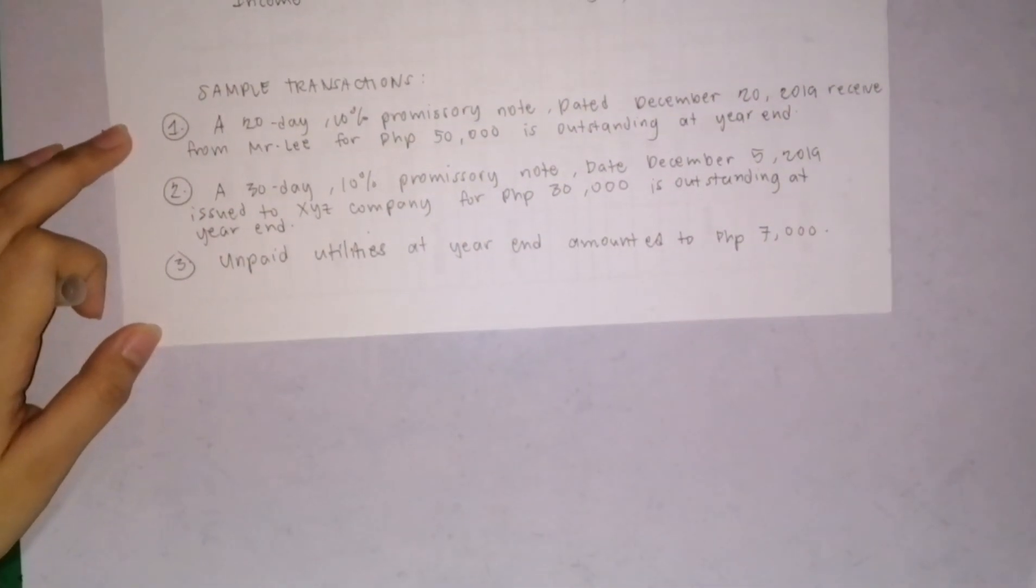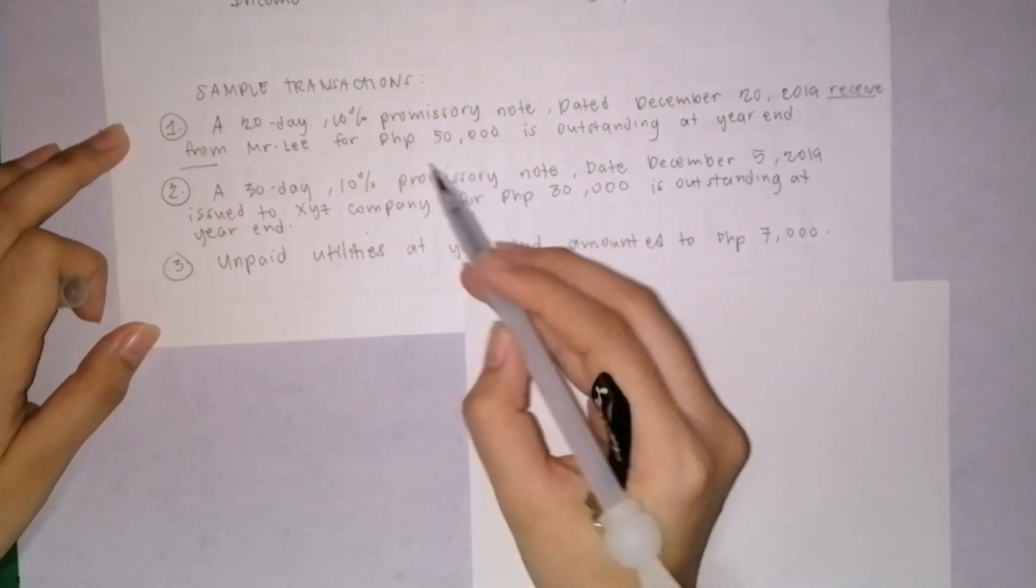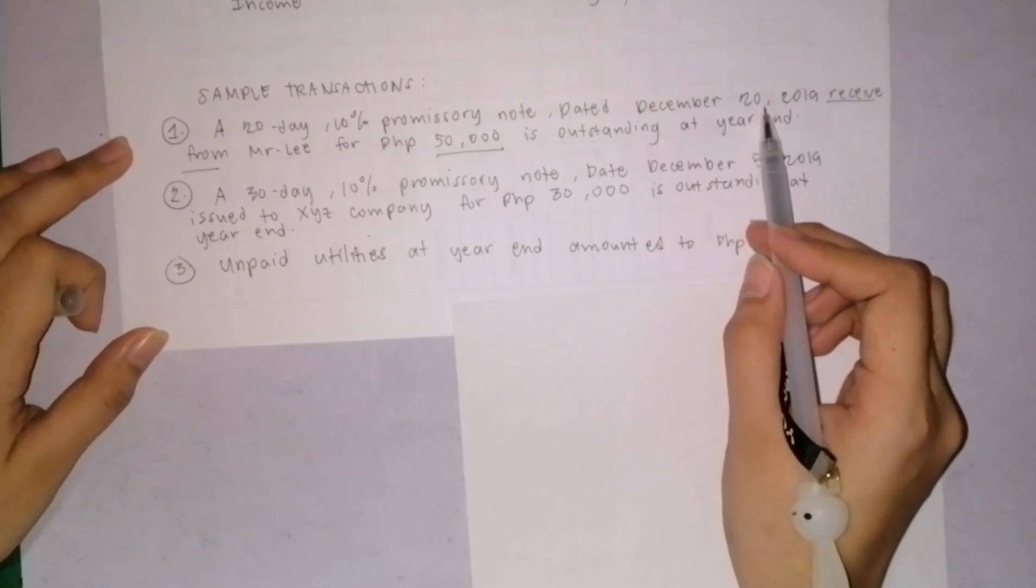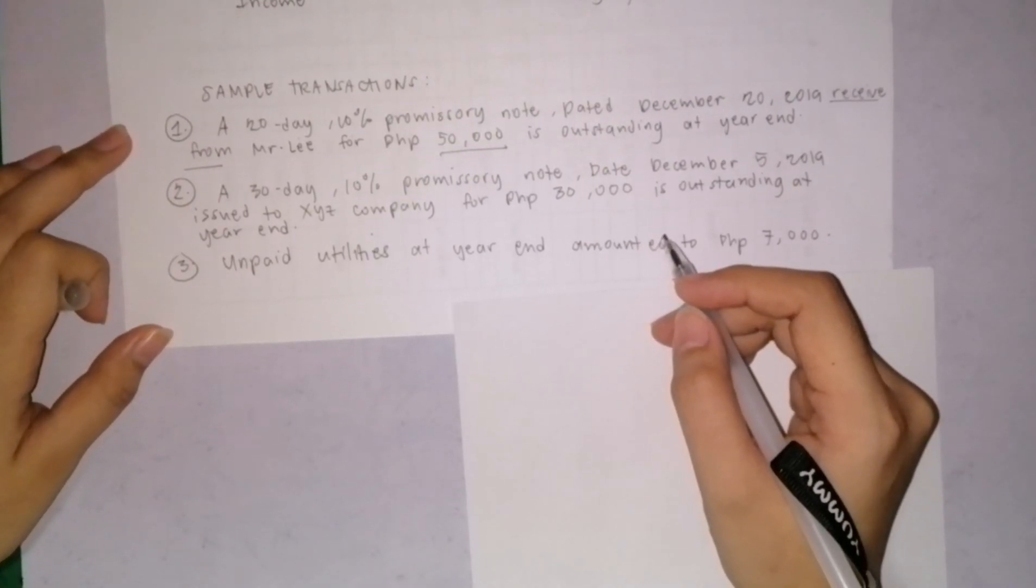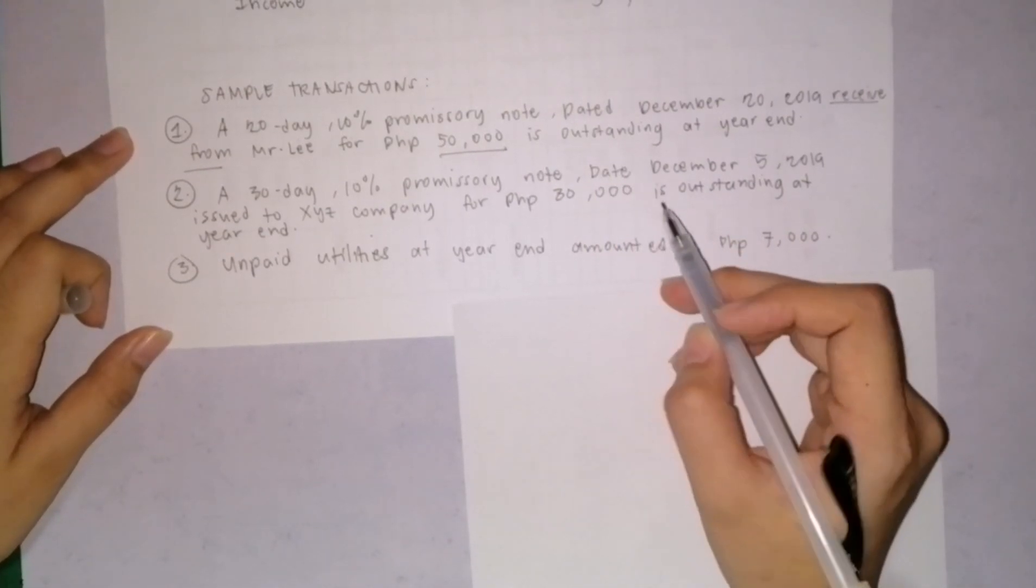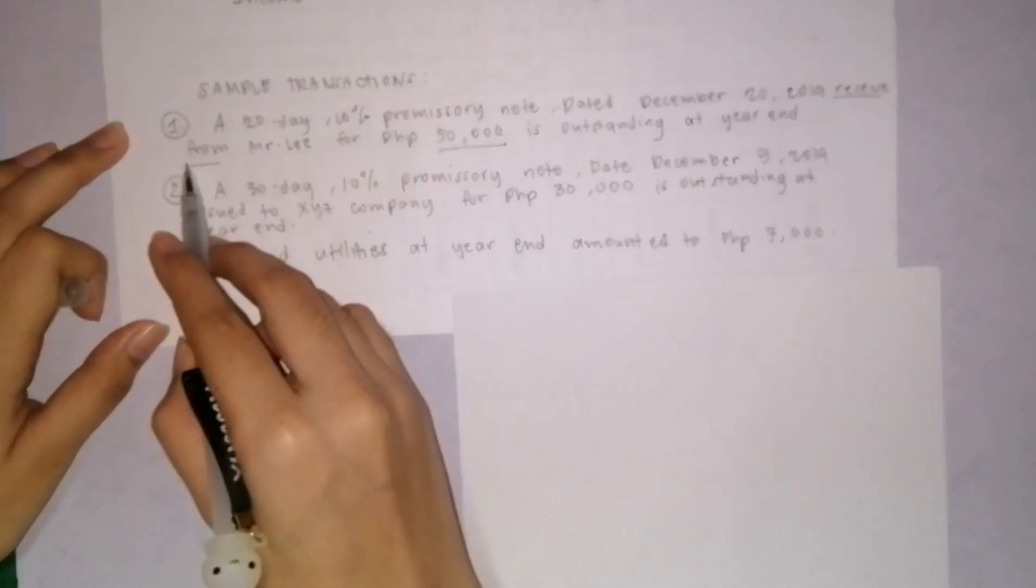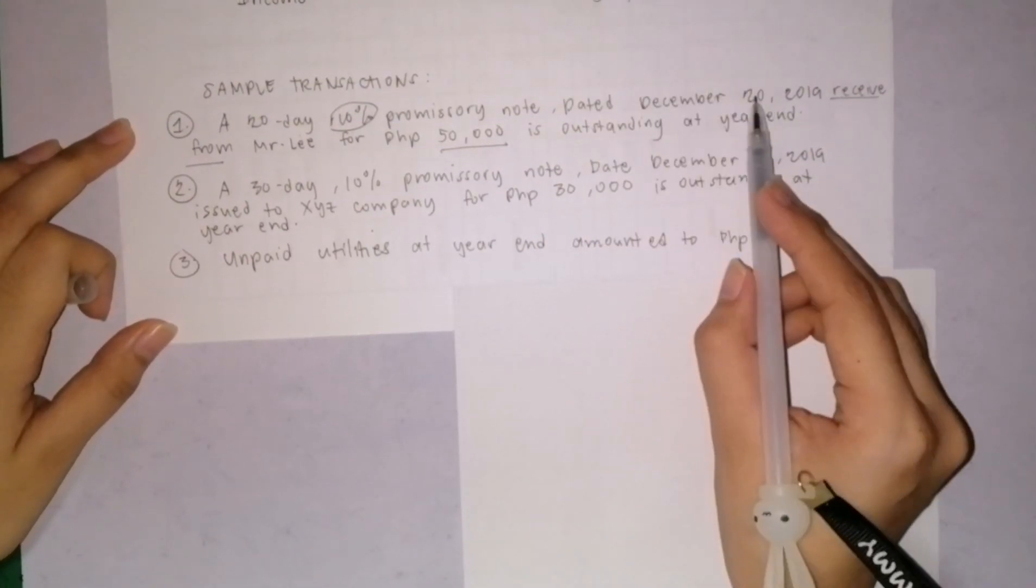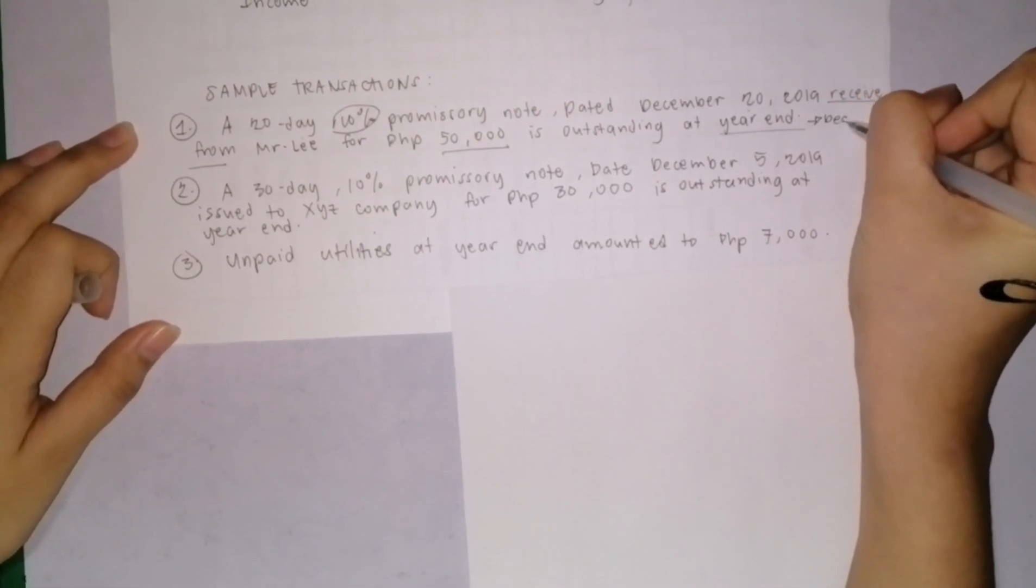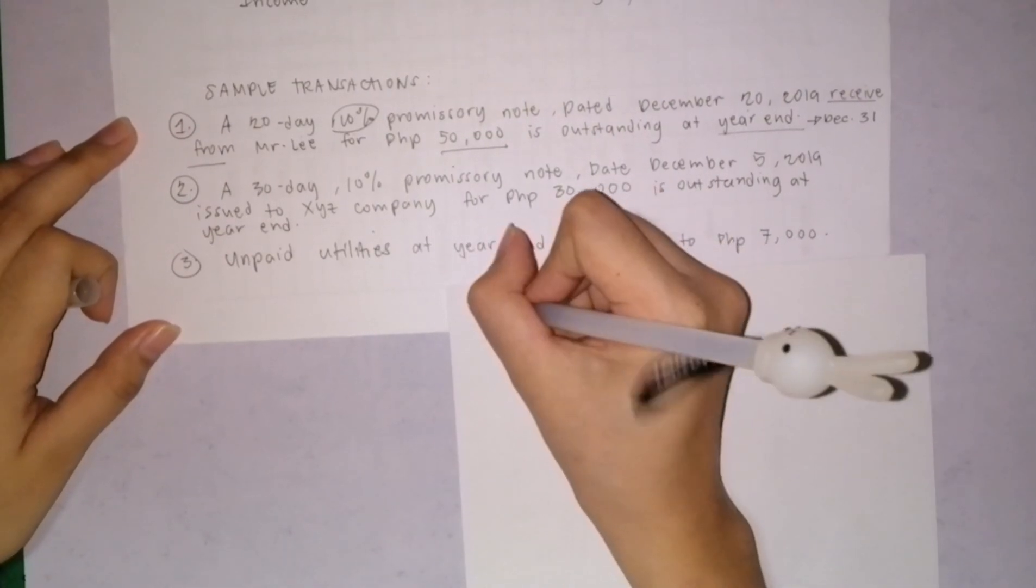To further understand, we have sample transactions about accruals. A 20-day 10% promissory note dated December 20, 2019 received from Mr. Lee for 50,000 is outstanding at year-end. On December 20, we received a promissory note, which is a formal promise to pay. We received the promissory note, so we have receivables. It's linked with accounts receivable but is done formally as it's reduced into writing. The probability of collection is higher but not 100% sure. The note has 10% interest, meaning the promissory note is interest-bearing. It's dated December 20, 2019, and at year-end December 31, 2019, we'll determine how much interest has accrued.